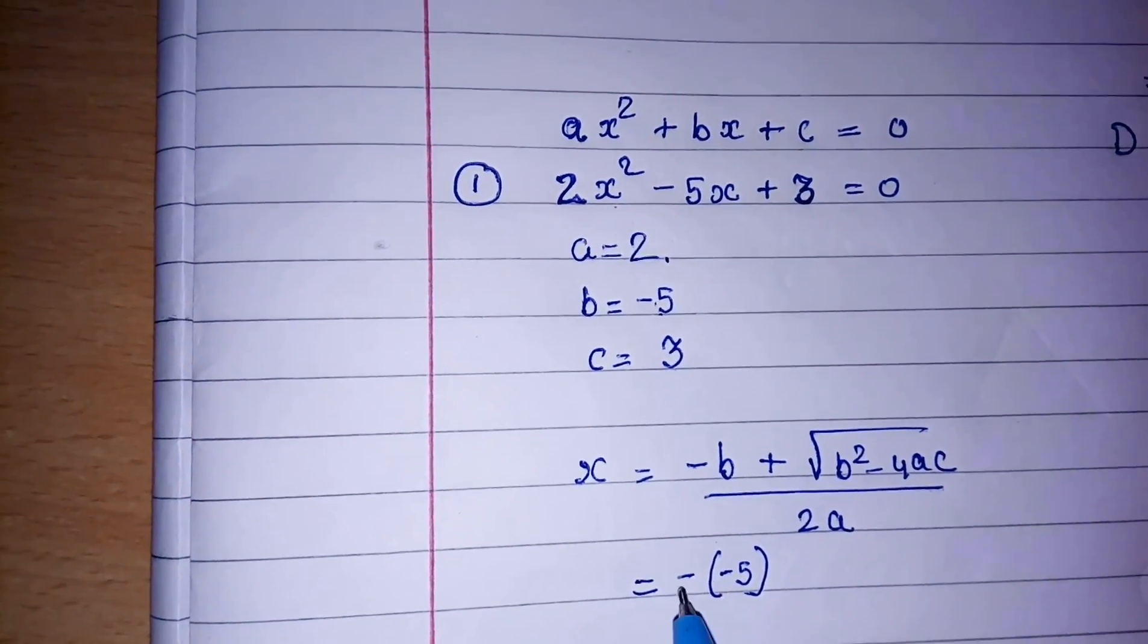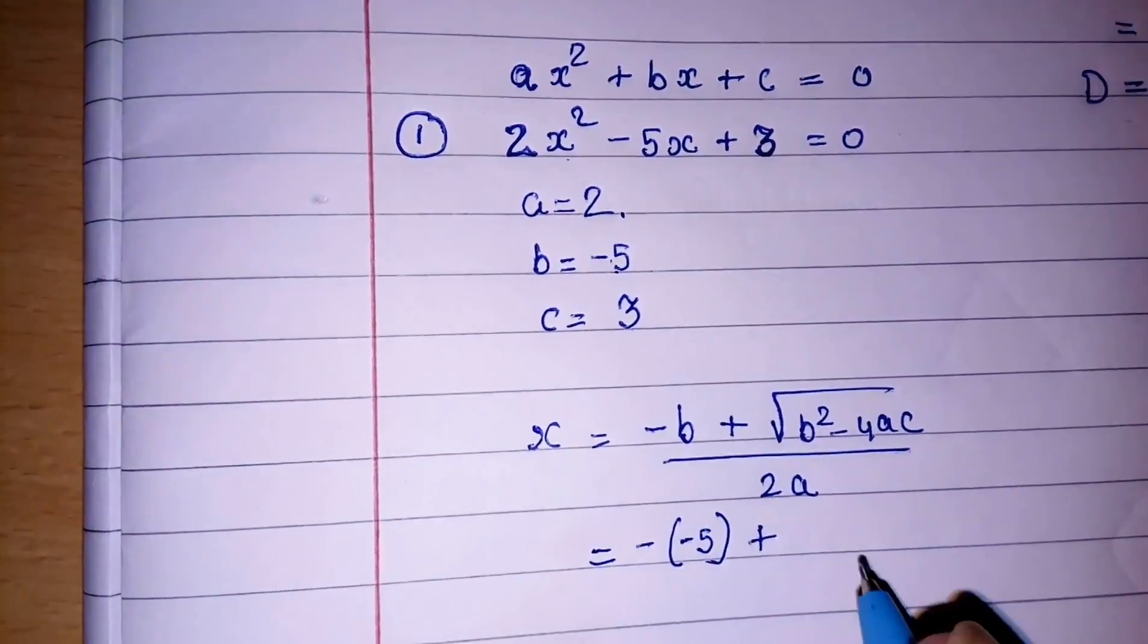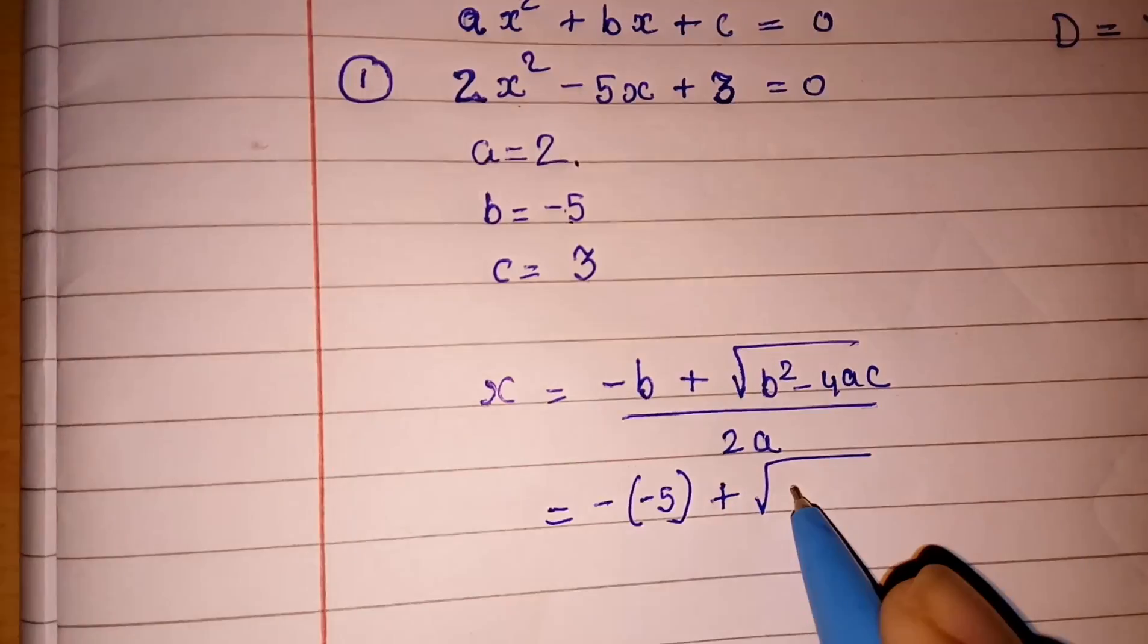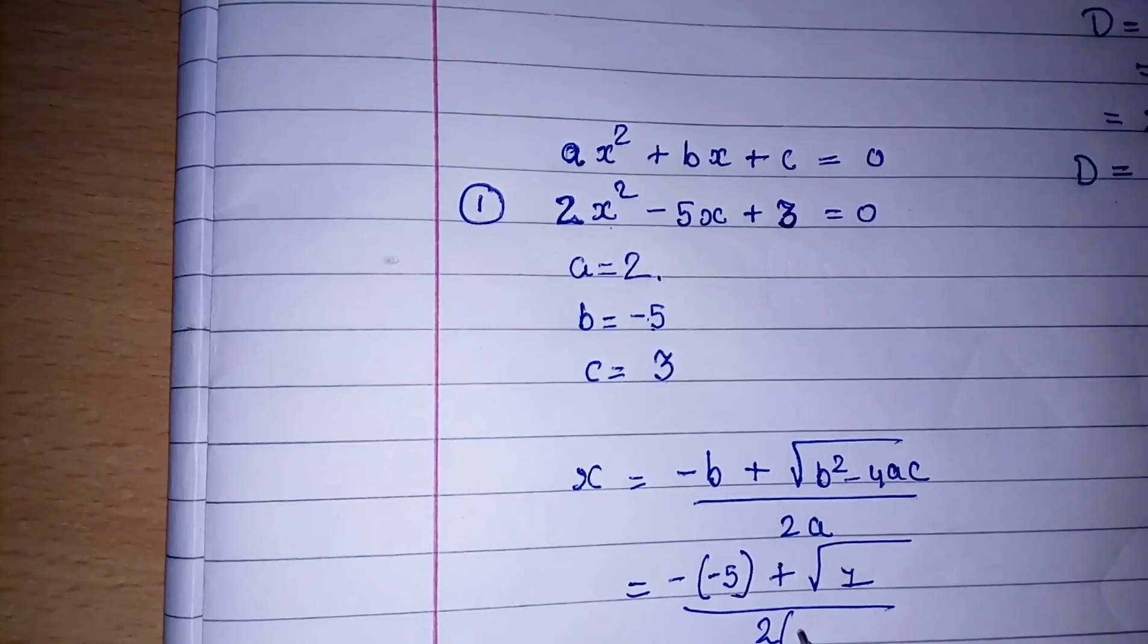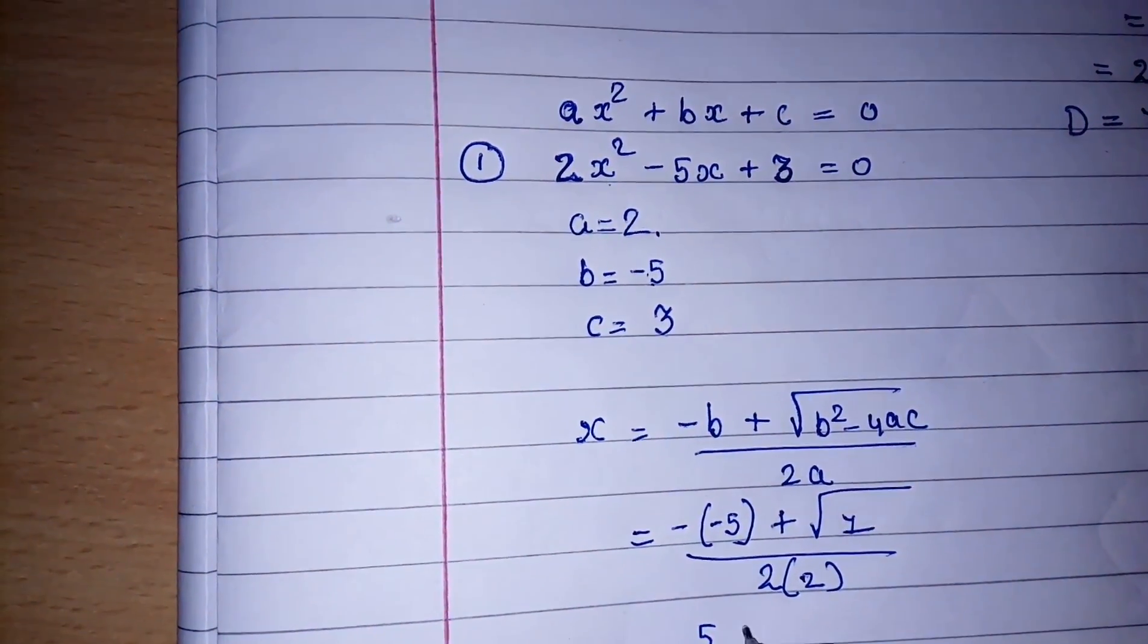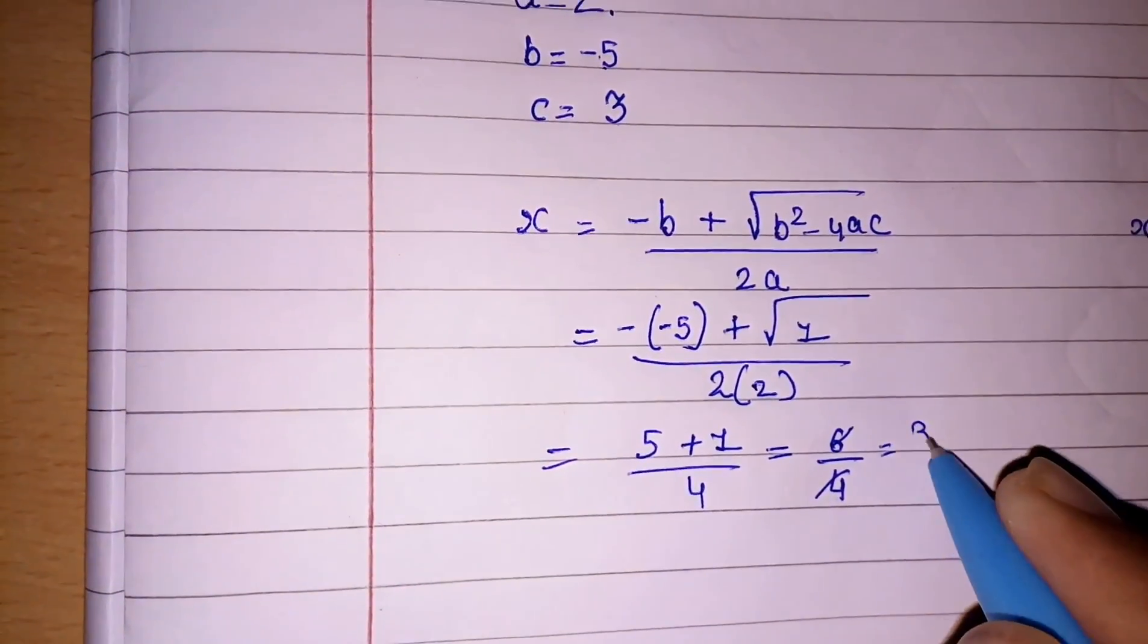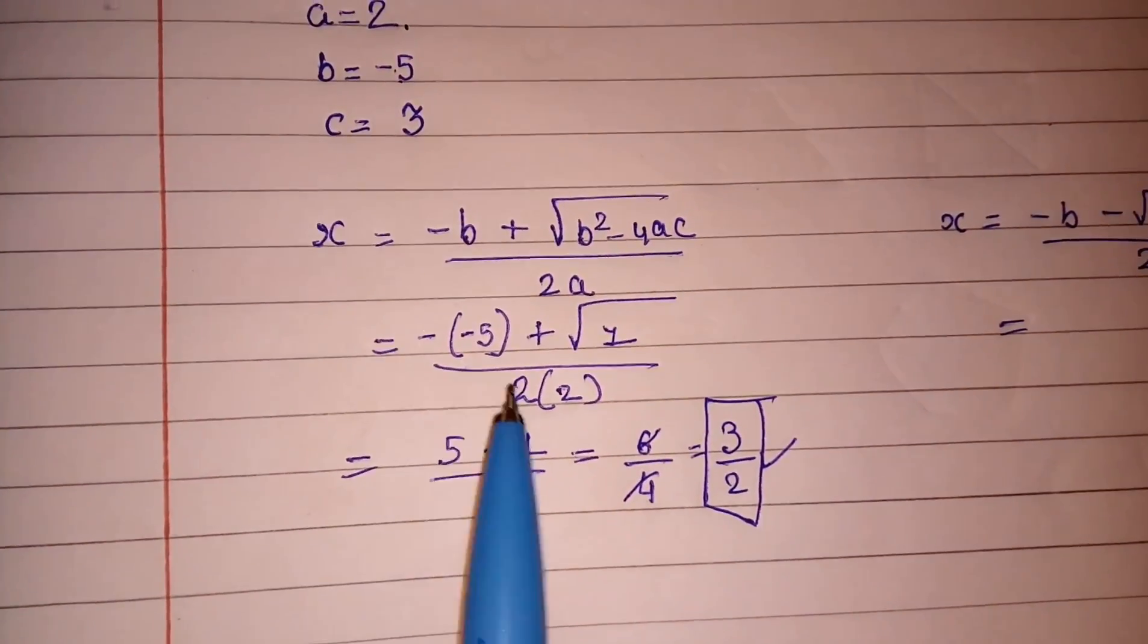Generally students are making mistakes here. They forgot to take two minus. They generally take it minus 5 and keep the values, and that is why they are not getting marks for this type of things. Now b² - 4ac, earlier only we had found out b² - 4ac = 1, so directly we will keep it here: 1. Then 2 × a, what is a? It's 2. So 2-(-5) is +5, under root 1 will be 1, and 2×2 is 4. So it is 6/4, we will get 3/2. So this is our first root.